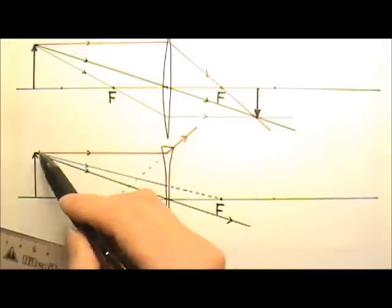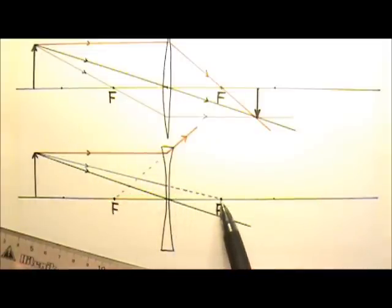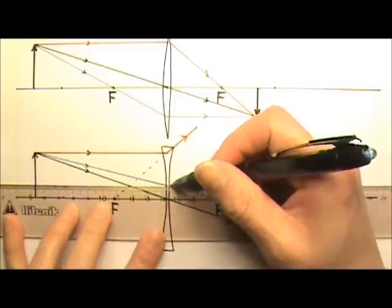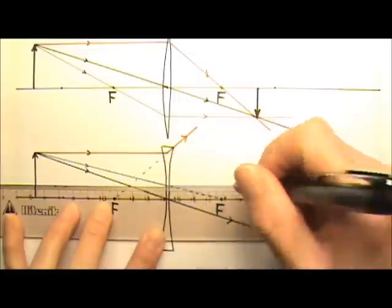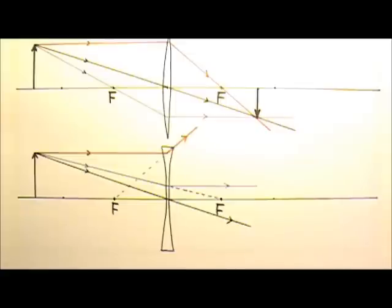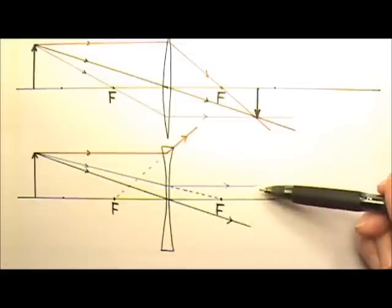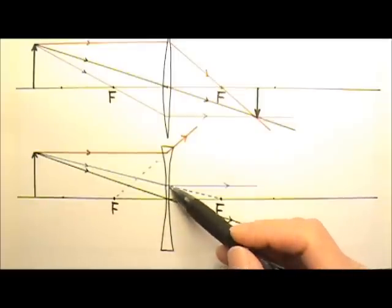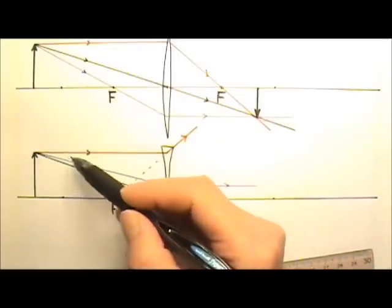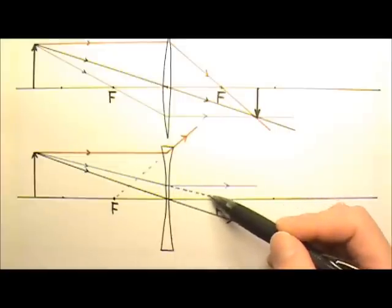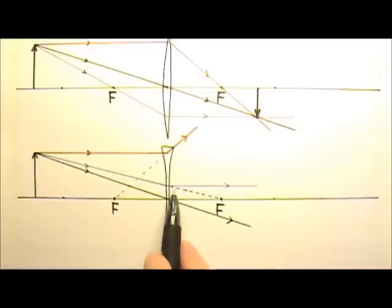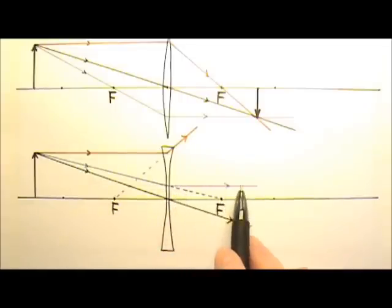The ray whose extension goes to the focal point is going to get refracted and bent parallel to the principal axis, because the light rays are retraceable. If this paraxial ray comes in, it is going to get bent away from the principal axis, with its extension going to the focal point. So the ray with its extension going to the focal point will get refracted and bent parallel to the principal axis.